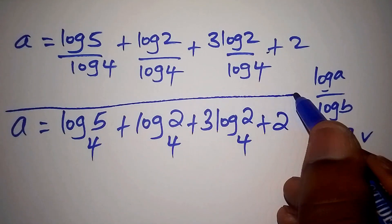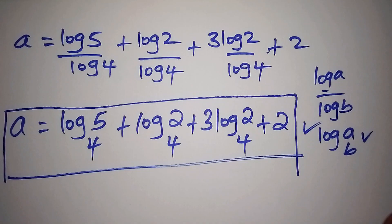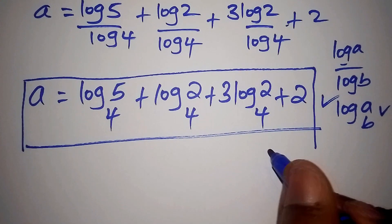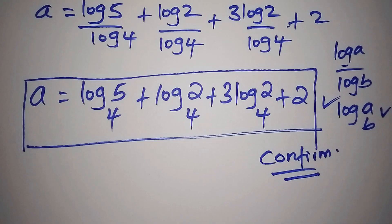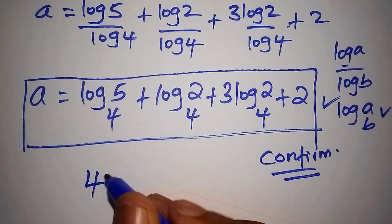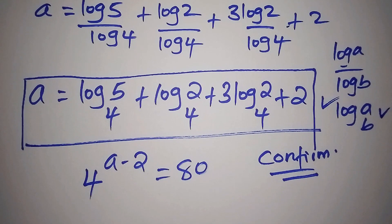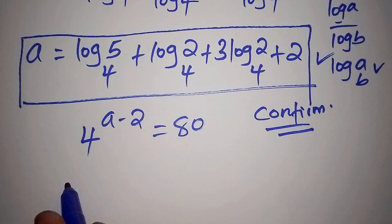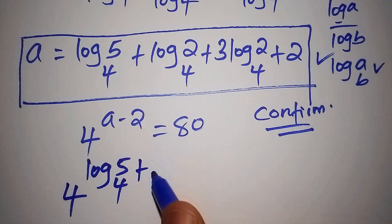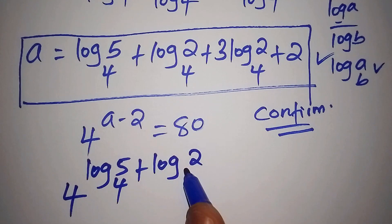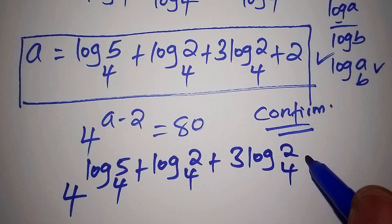This qualifies as the final answer. Let's share what you got in the comments and then confirm if this answer is correct. We had 4 to the power of a minus 2 equals 80. Now instead of a, we substitute: 4 to the power of the log of 5 to the base of 4, plus the log of 2 to the base of 4, plus 3 times the log of 2 to the base of 4, plus 2.